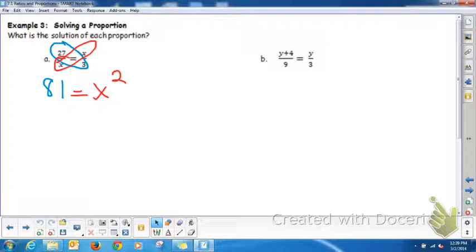So we want to say the square root of 81 is equal to x. Square root of 81, 9 is x. And isn't that true if you plugged it in? 27 over 9 is equal to 9 over 3. Both are equal to 3 if you reduce them.